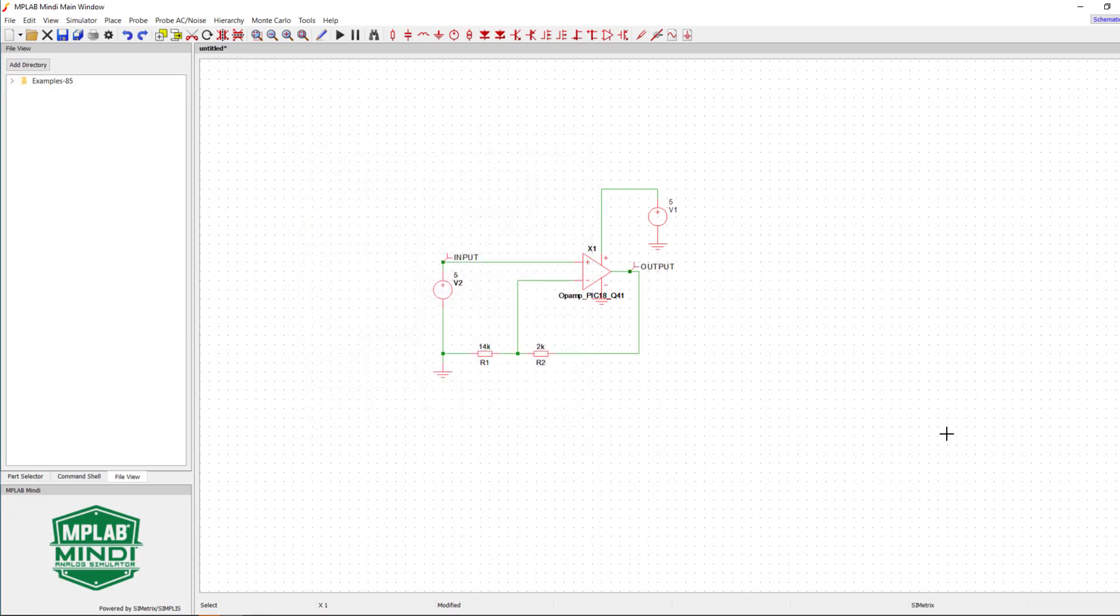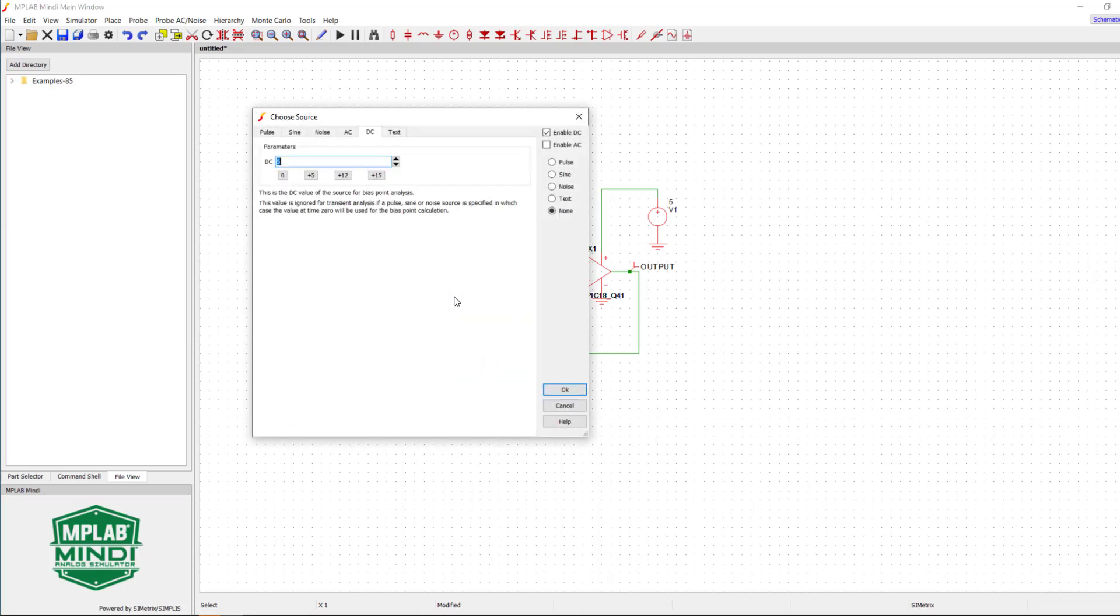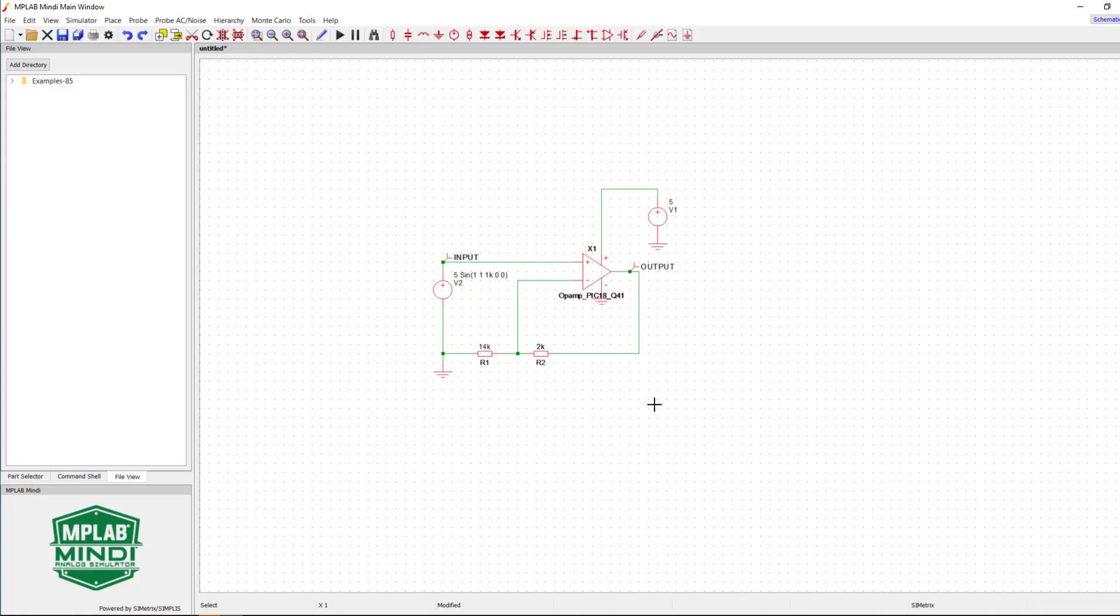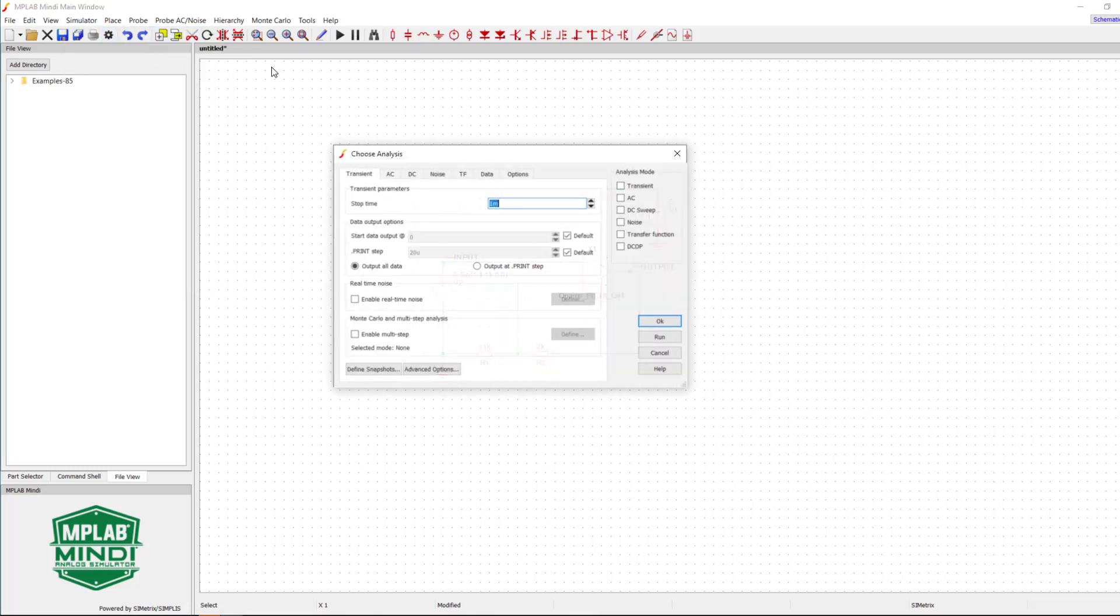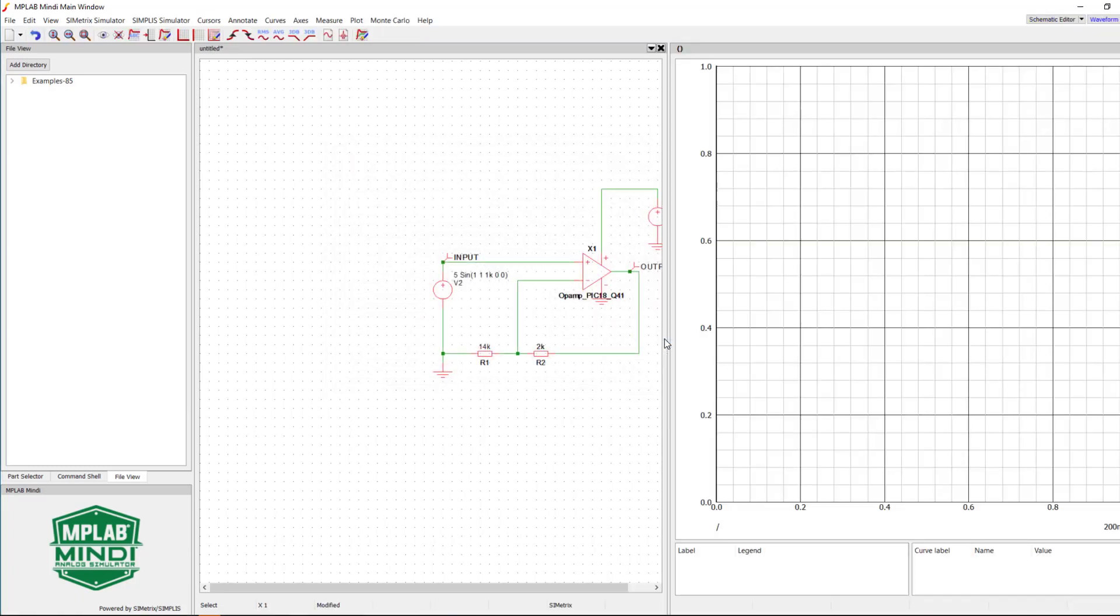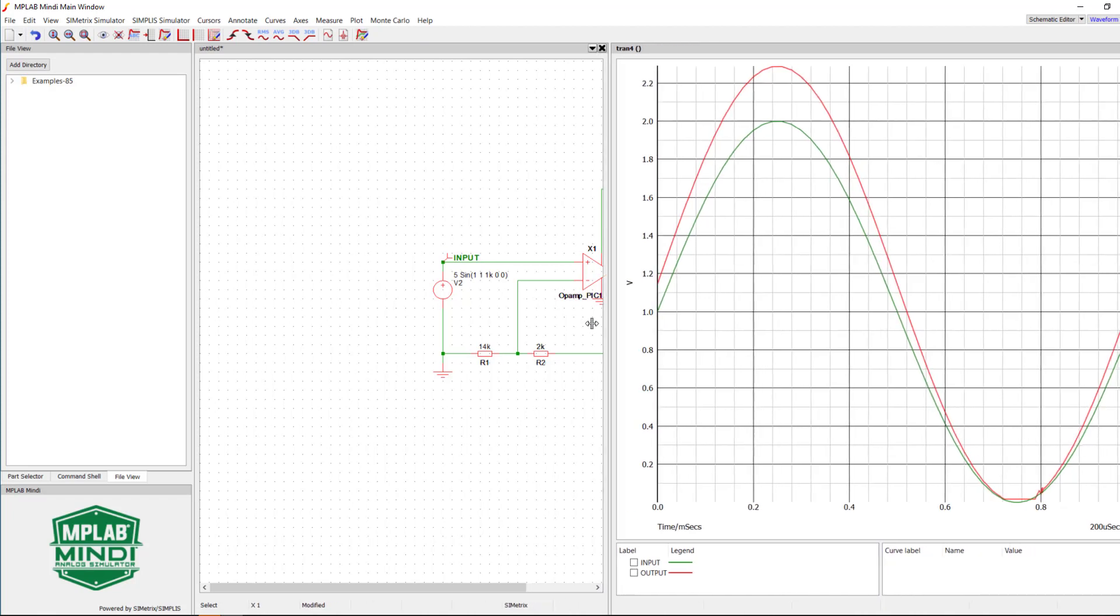We will now configure the voltage source to replicate a sine wave with a 2-volt amplitude and a 1-volt DC offset at 1kHz. Finally, let's set up the analysis. For this configuration, we will run a transient analysis with a runtime of 1ms. Once the transient analysis is set up, hit the Run button to see the Results or Play button on the Schematic page.